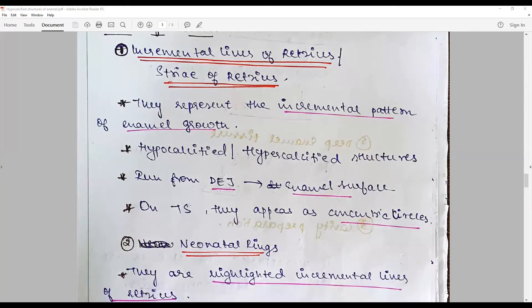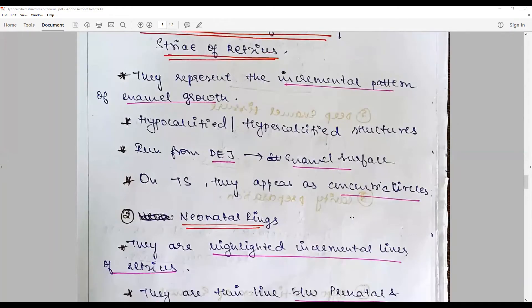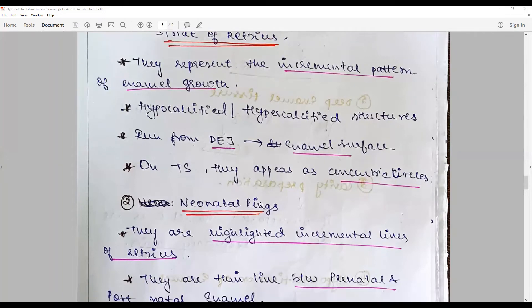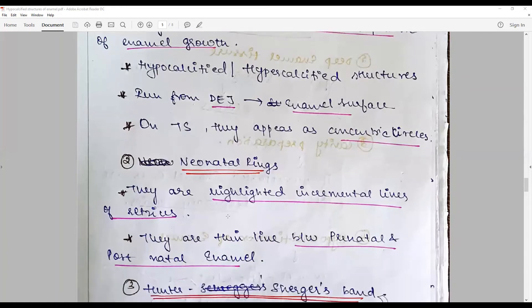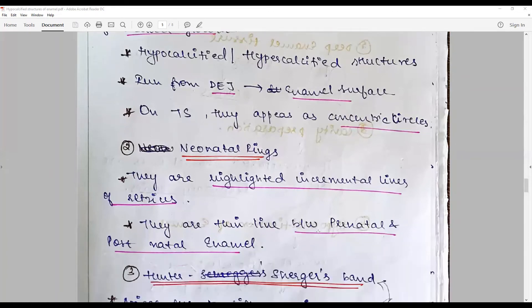On cross sections they appear as concentric circles, and otherwise they are seen as rings. Neonatal rings are highlighted incremental lines of Retzius between prenatal and postnatal enamel. Any drug history will be reflected here.